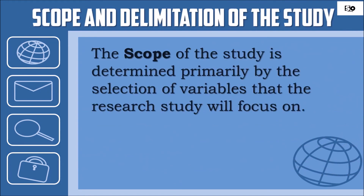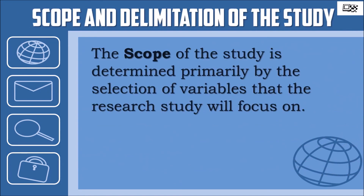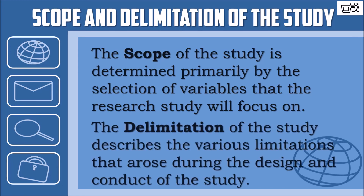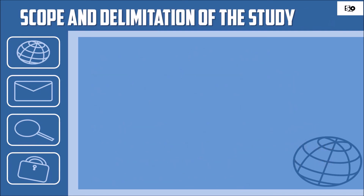Scope and Delimitation of the Study. The scope of the study is determined primarily by the selection of variables that the research study may focus on, while the delimitation of the study describes the various limitations that arose during the design and conduct of the study. Here is an example of the scope and delimitation of the study.